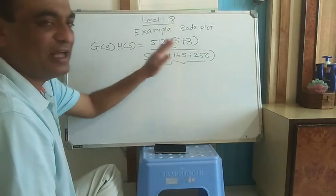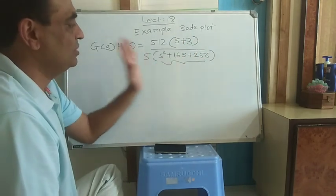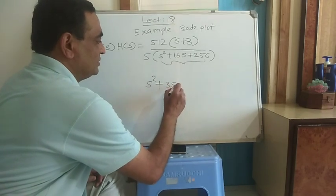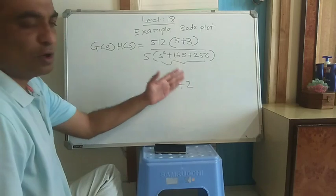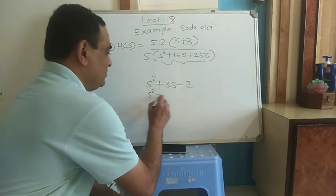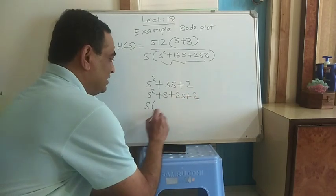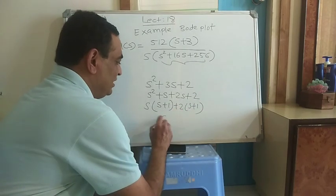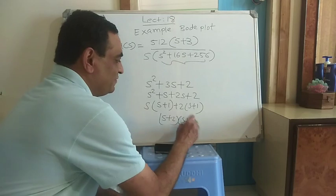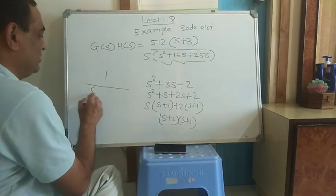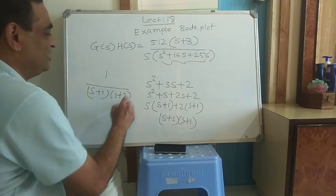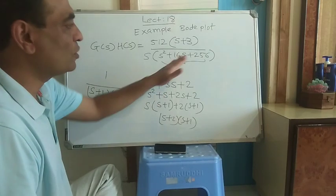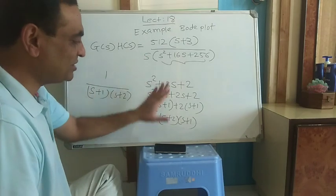For example, consider the term s² + 3s + 2. This is no longer a second-order term because it factors as s² + s + 2s + 2, which gives (s+1)(s+2). So this term is (s+1)(s+2) — it is the combination of two first-order terms. If the roots are real, that term is no longer a second-order term.